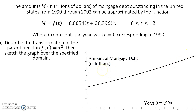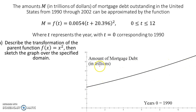In part A of this problem, we're asked to describe the transformation of the parent function f(x) = x² and then sketch the graph over this specified domain, which I already did — I made the graph of it right here. But we have to describe the transformation.